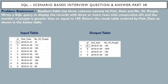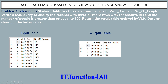Hello friends, this is Sunil and welcome back to my channel IT Junction for All. In this video I am going to discuss SQL scenario-based interview question and answer, part 38. The problem statement: the stadium table is the input table and it has three columns — ID, visit date, and number of people. Write an SQL query to display records with at least three or more rows with consecutive IDs where number of people is greater than or equal to 100, returning the result ordered by visit date.